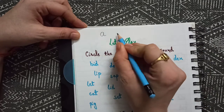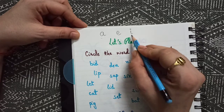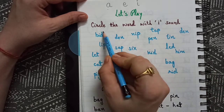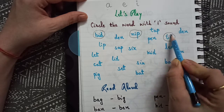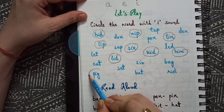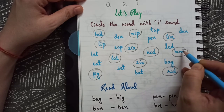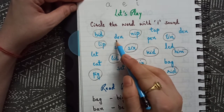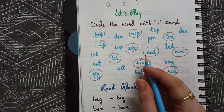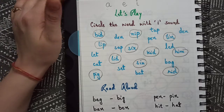We have done A, E, I. A says 'a', E says 'e', I says the short 'i'. So let the child find out the words with the I sound — like bid, nip, tin, lip, six, kid, him, lid, pig, sin, rid. Now what happens is whenever a child is reading these words, at the same time he is reading E and A words also, which is very beneficial because the more they repeat, the more it will be a drilling process for them.